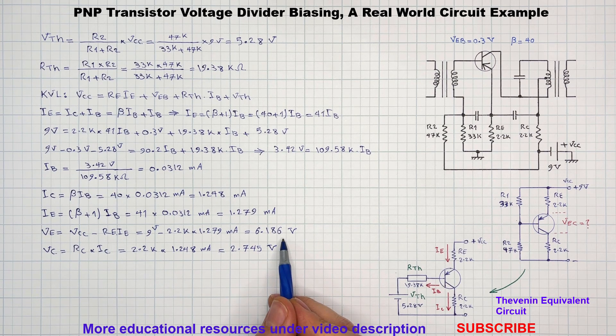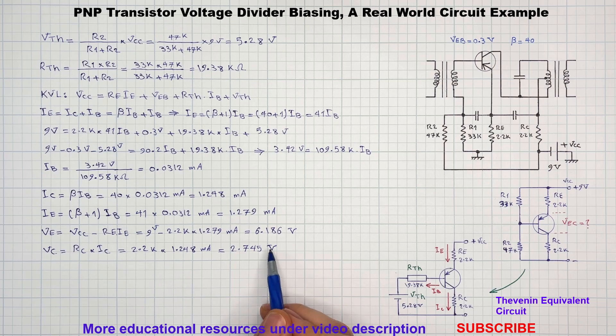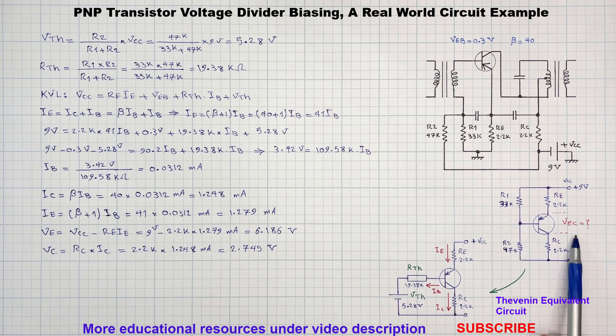The emitter voltage is around 6.18 volts and the collector voltage is 2.74 volts. And finally, the emitter to collector voltage will be calculated.